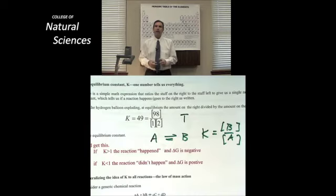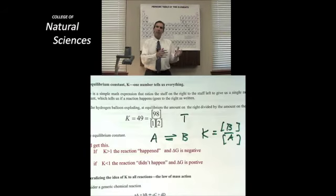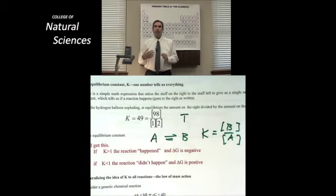Conversely, if a reaction doesn't happen as written, it means that the reverse reaction is written. I make more stuff that's on the left side, more stuff that's in the denominator, and therefore K is less than 1, and delta G is positive. The reaction did not happen.